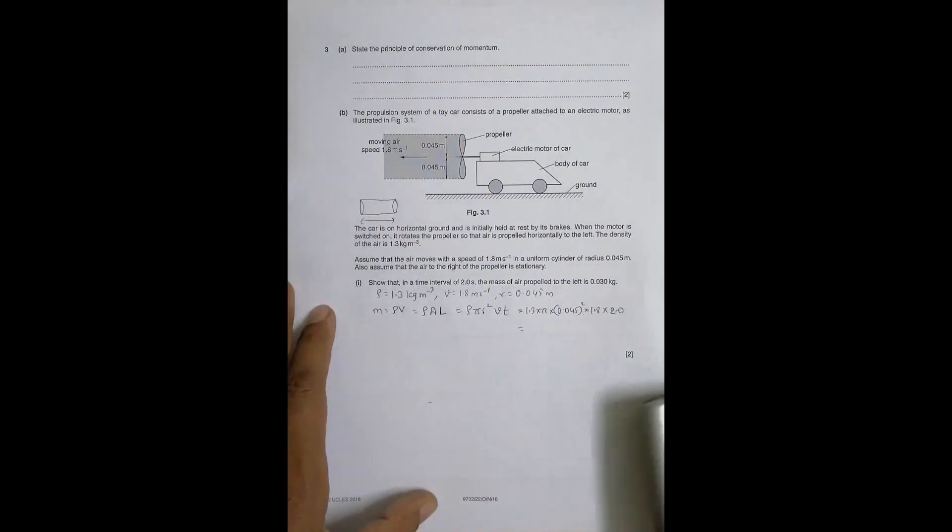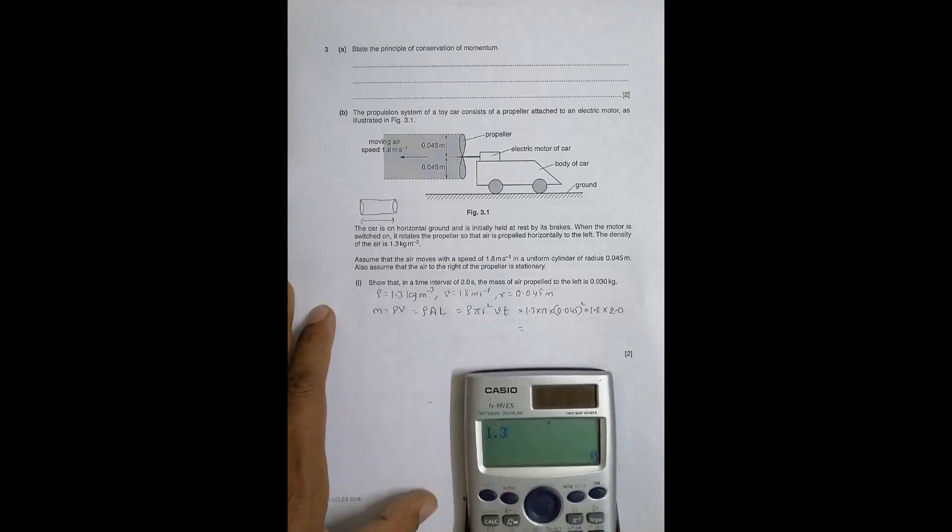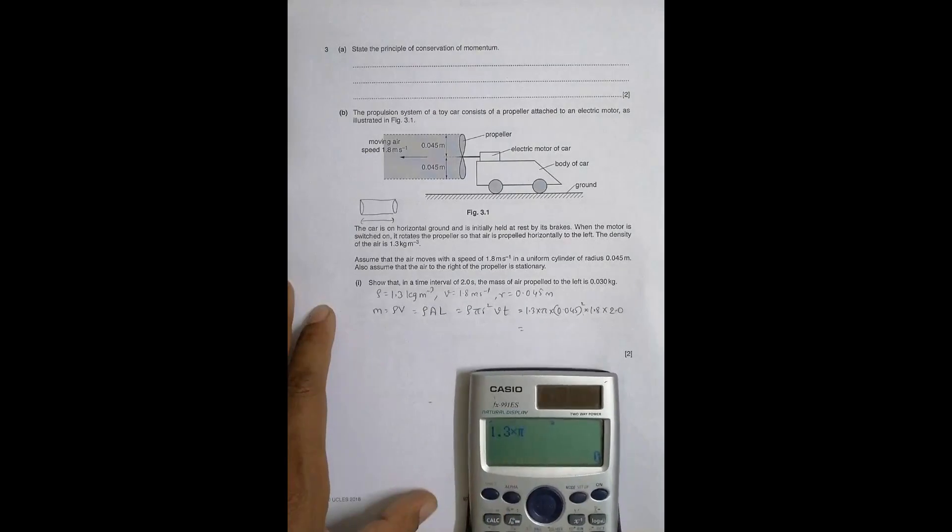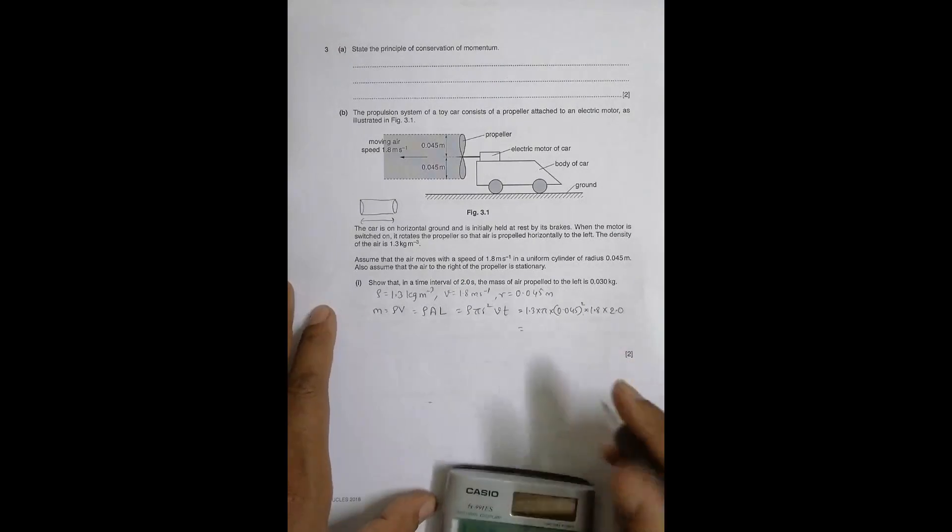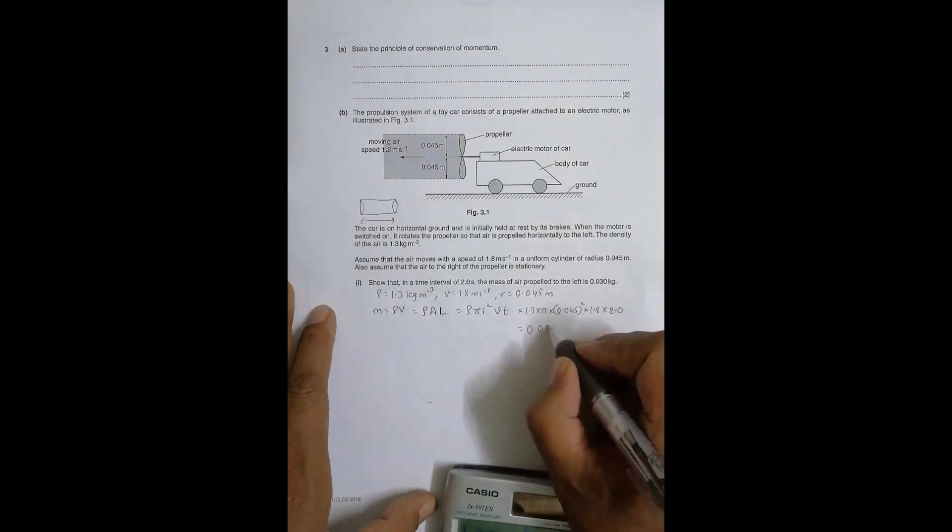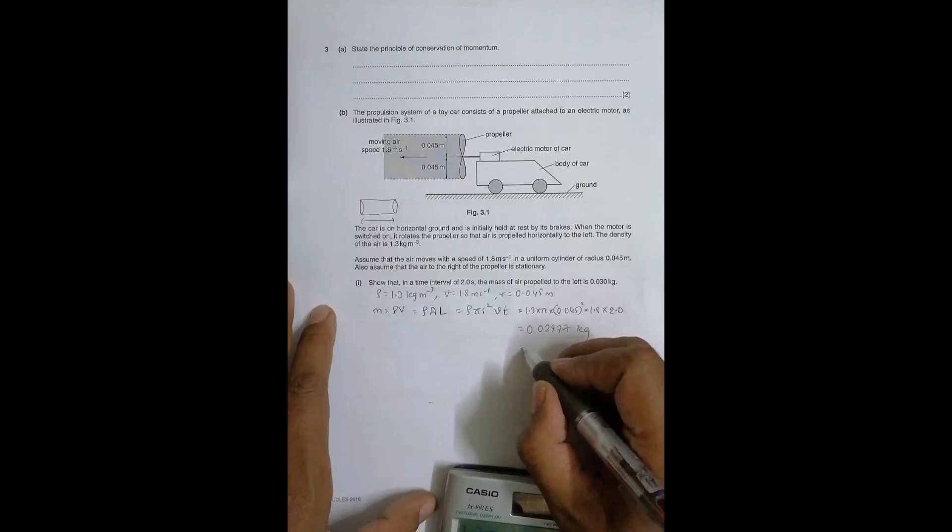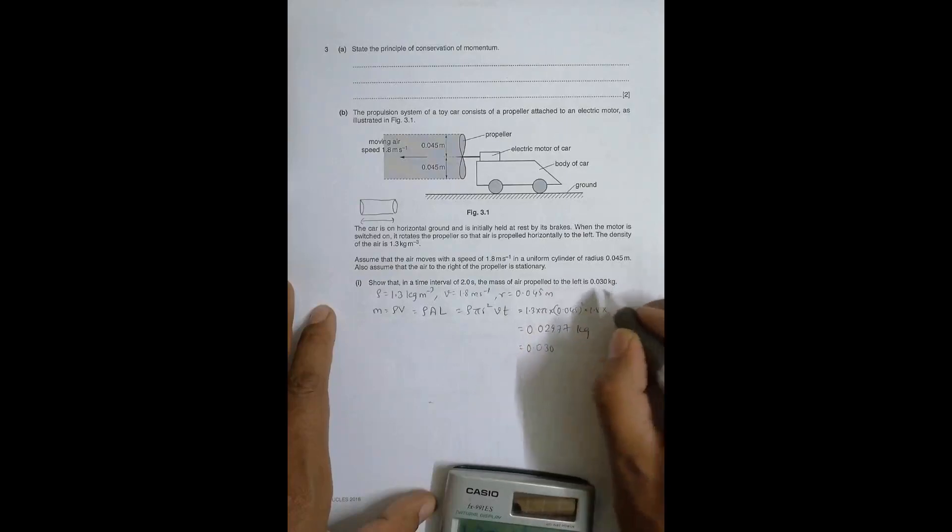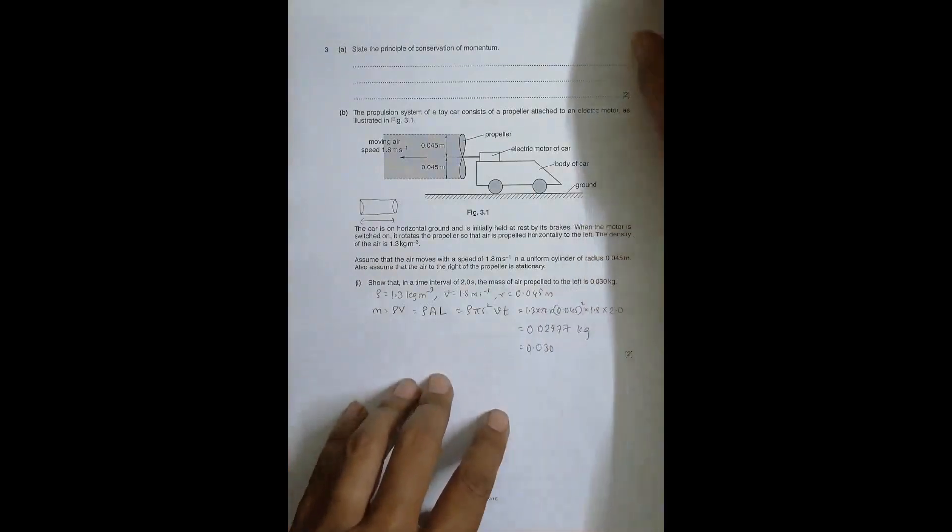So when I do the calculations, here is the calculator. It is 1.3 into π into 0.045 squared into 1.8 into 2.0 equals. So the mass is equal to 0.02977 kg. When I use it in 2 significant figures it will be 0.030 as given in the question. Hence proved.